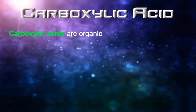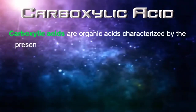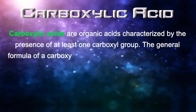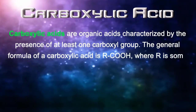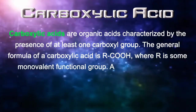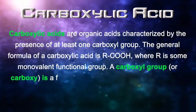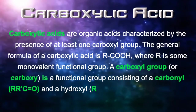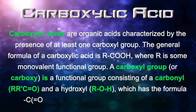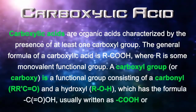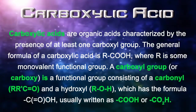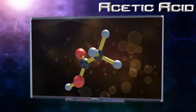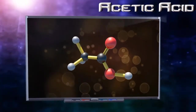Carboxylic Acids. Carboxylic acids are organic acids characterized by the presence of at least one carboxyl group. The general formula of a carboxylic acid is RCOOH, where R is the monovalent functional group. A carboxyl group is a functional group consisting of a carbonyl and a hydroxyl, which has the formula COOH, usually written as COOH or CO2H.